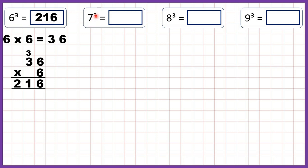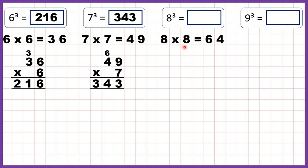Now 7 cubed, that's 7 times 7 times 7. 7 times 7 is 49, and then we take that 49 and multiply it by 7 again. 9 times 7 is 63, and 4 times 7 is 28 plus 6 is 34, so 7 cubed is 343.